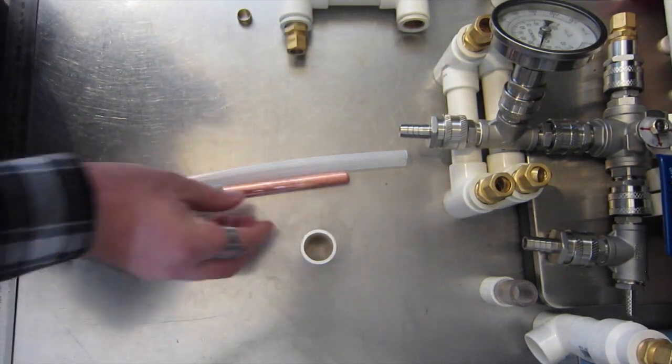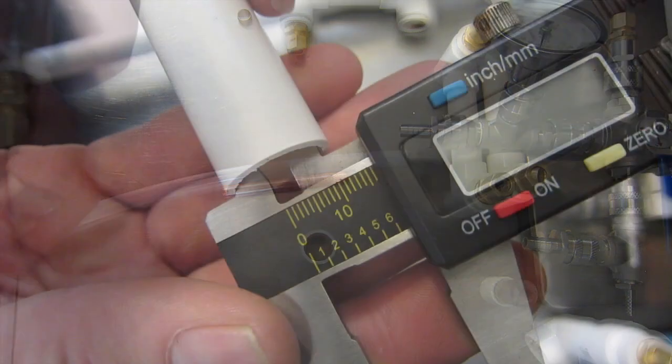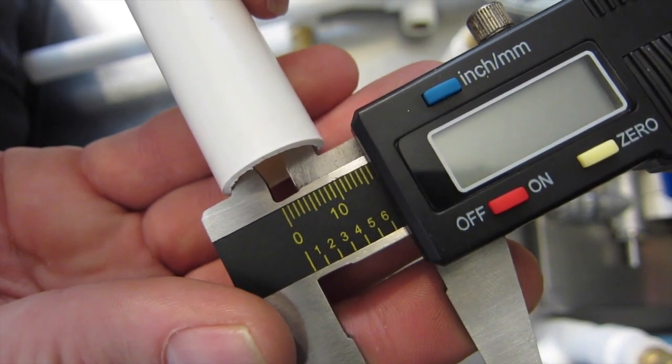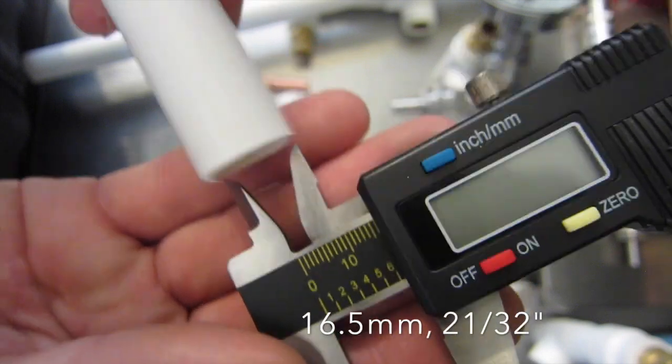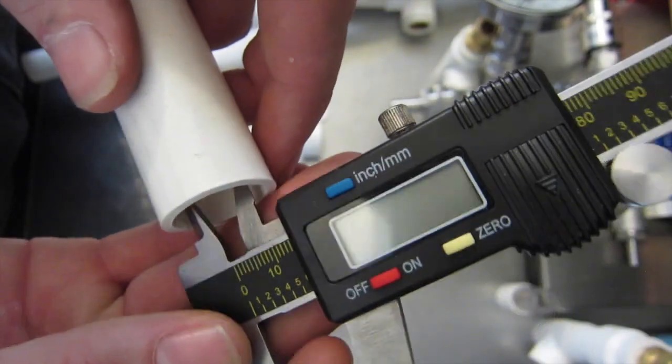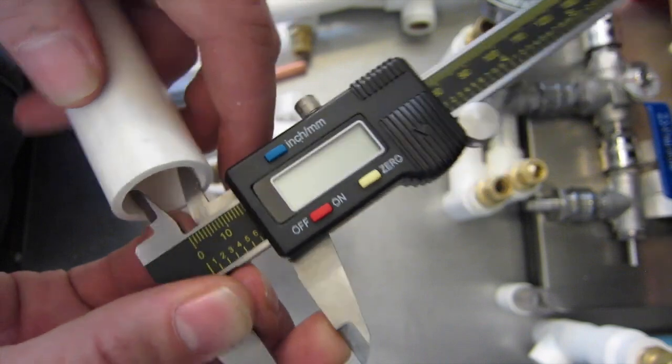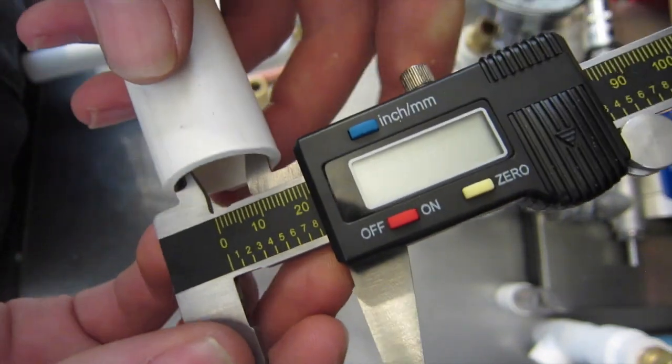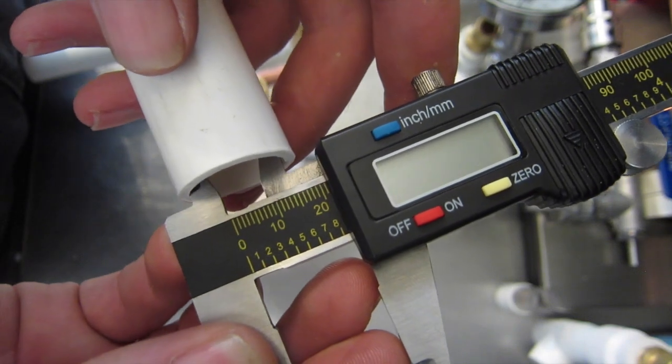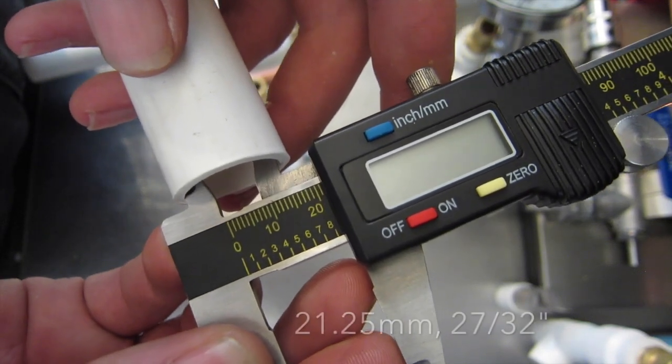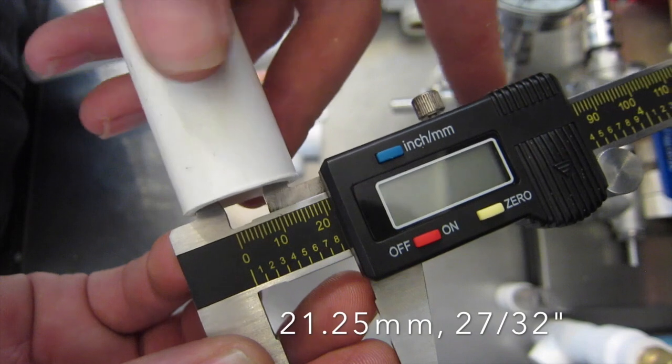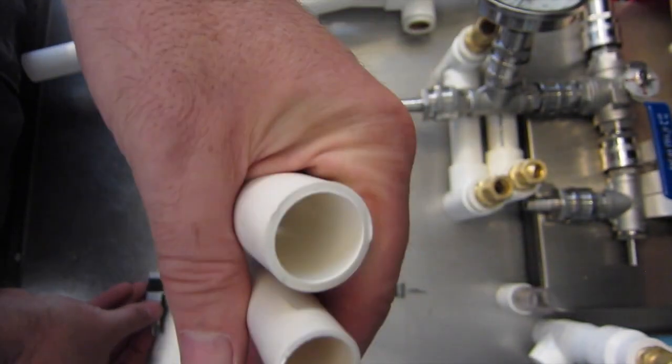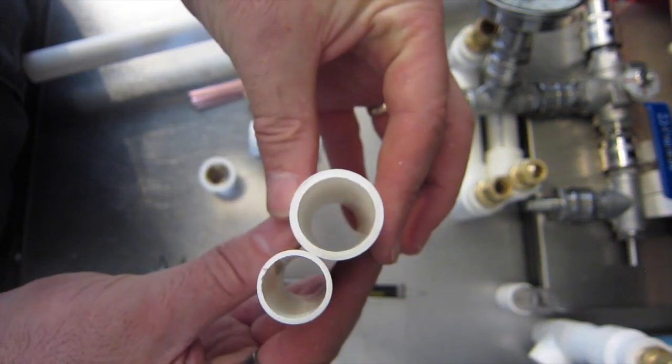Now talking about pipes - this 20mm pipe has an inside diameter of 16 and a half mil. This 20mm pipe has an inside diameter of 21.25 mil. So not all 20 mil pipe is built the same.